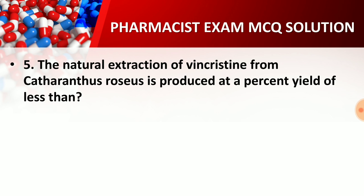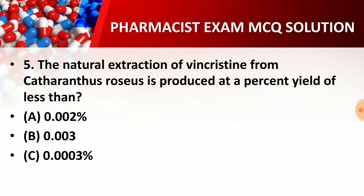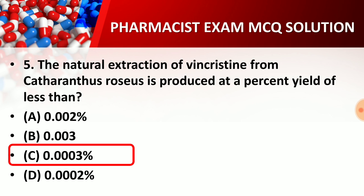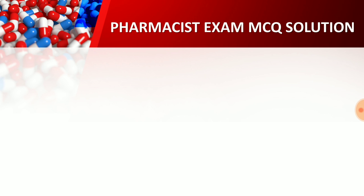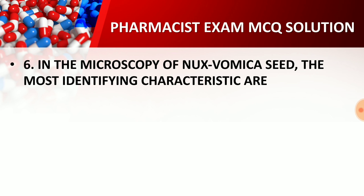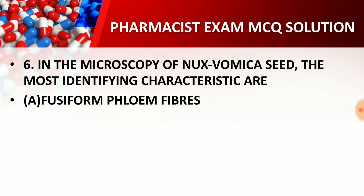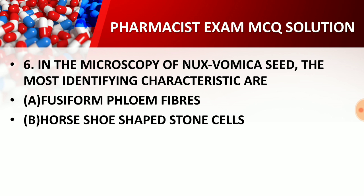Question five: The natural extraction of vincristine from Catharanthus roseus is produced at a percentage yield of less than — option A: 0.002%; option B: 0.003%; option C: 0.0003%; option D: 0.0002%. The right answer is option C — 0.0003%. The natural extraction of vincristine from Catharanthus roseus is produced at a percentage yield of less than 0.0003%.